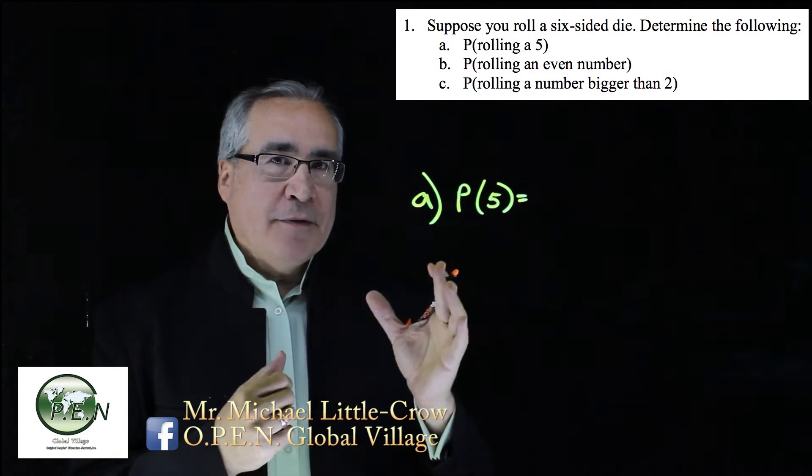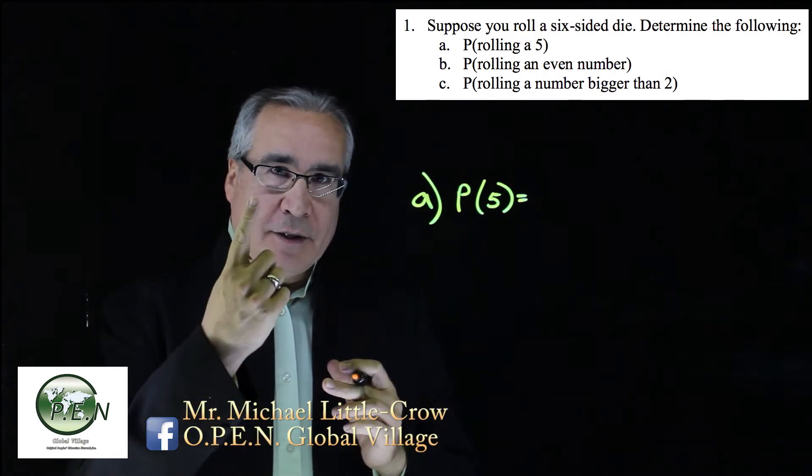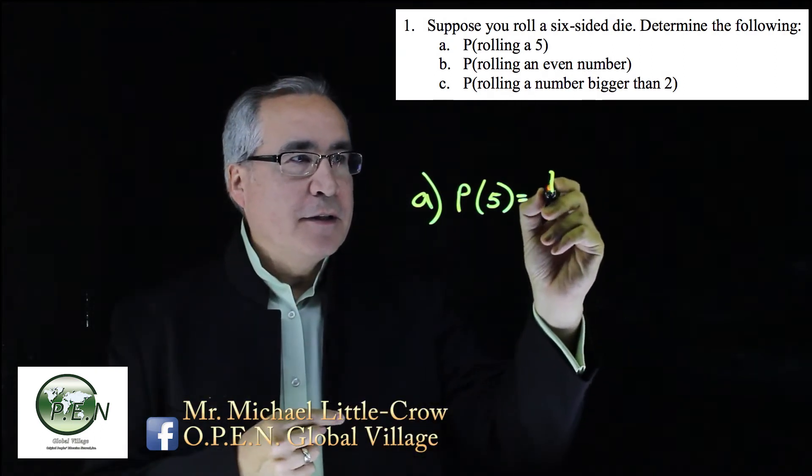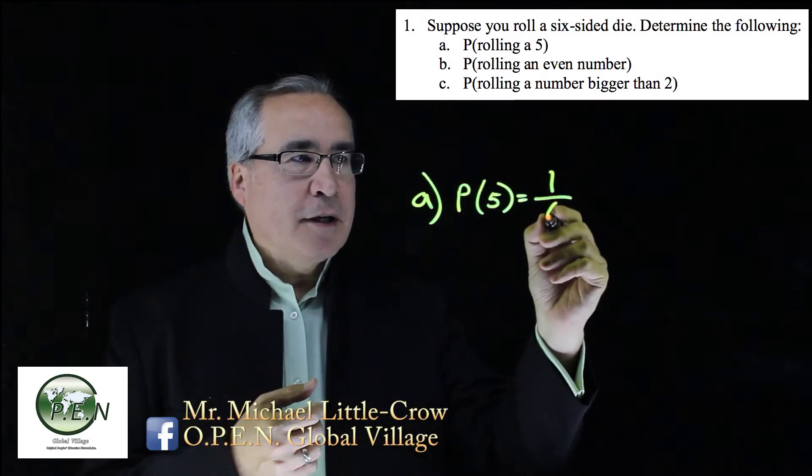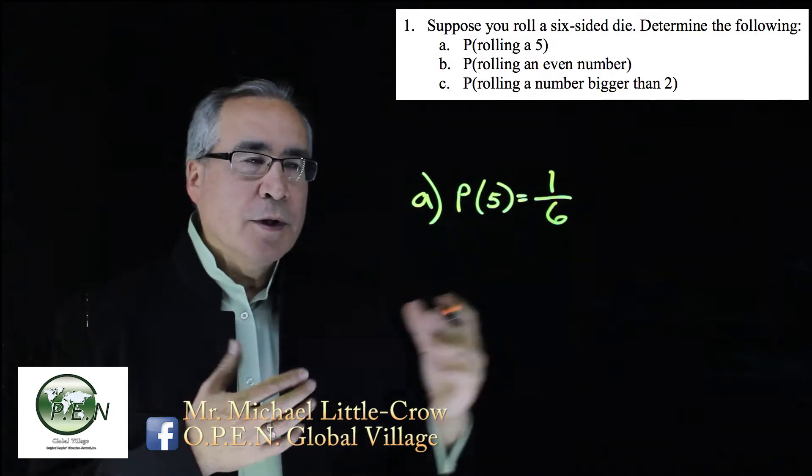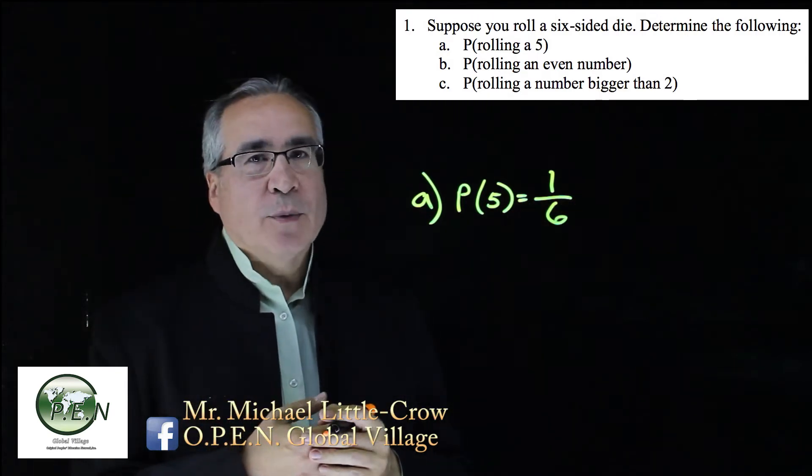So five, how many fives are on a six-sided die? There's one five. How many total outcomes are possible? There are six, one through six. So our probability is one sixth.